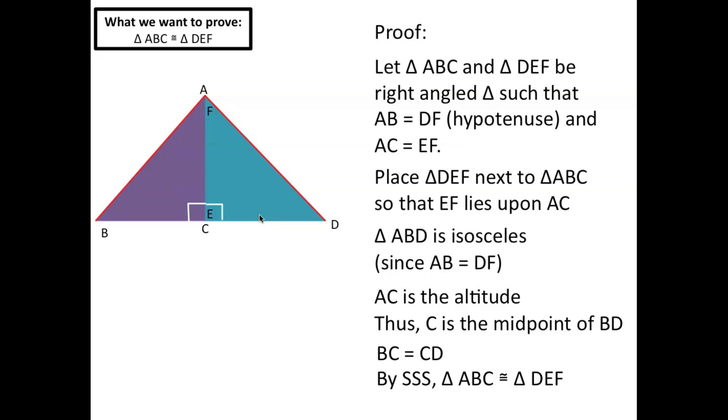So now we've shown that as long as we know that the hypotenuse and one of the sides are equal to the hypotenuse and the other side of the right angle triangle, then you can automatically assume that the two right angle triangles are congruent. Awesome!